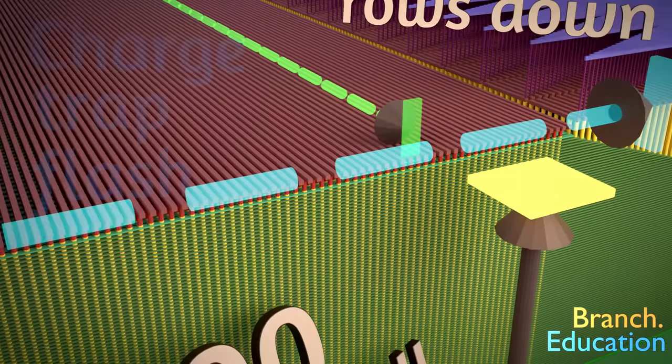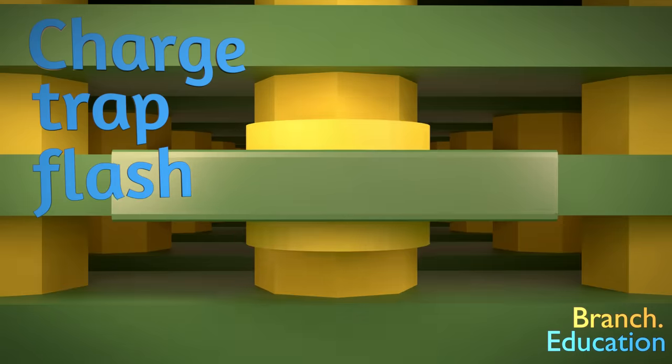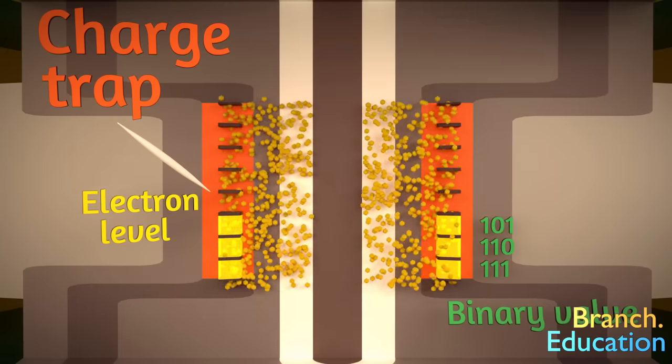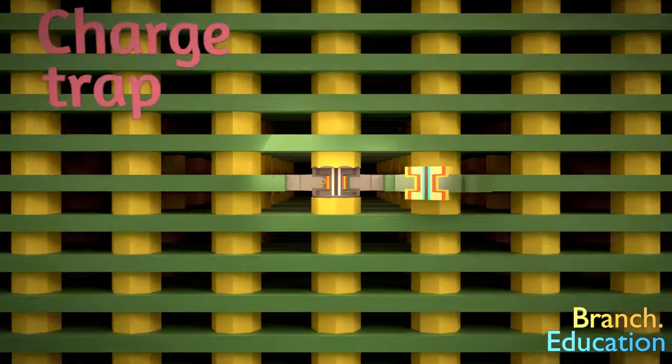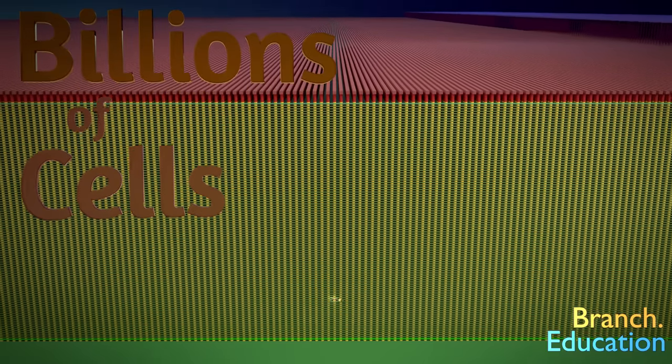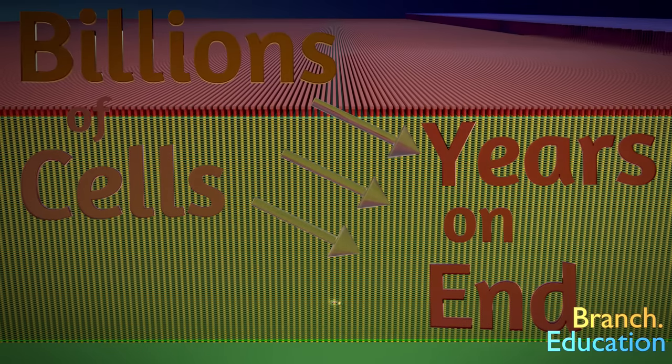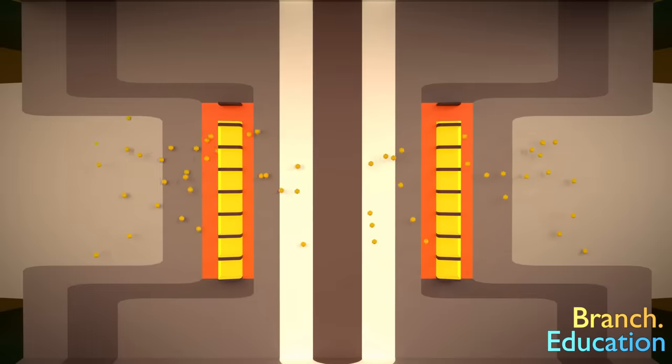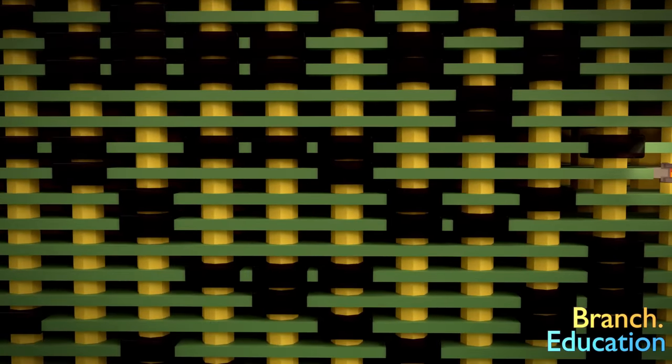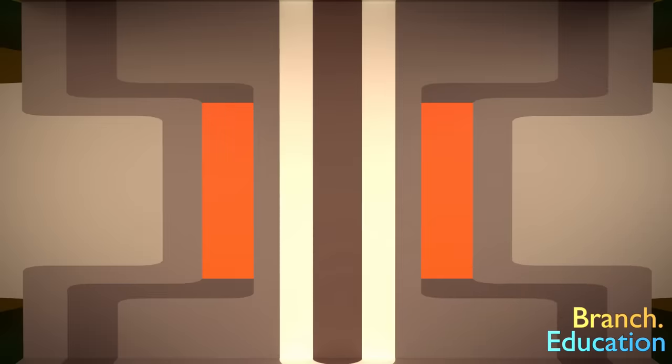These memory cells are called charge trap flash, and each memory cell contains a charge trap in which different levels of electrons are used to store three bits of information. But here's the issue. How do scientists and engineers design billions of nanoscopic memory cells that can reliably trap electrons for years on end? This is crucial because if the electrons are not properly trapped, your saved pictures and files would become corrupt, and you would lose entire sections of data.